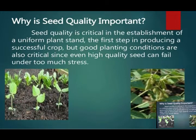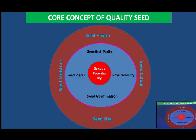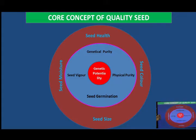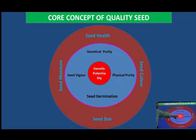These slides show why seed quality is important to grow a good commercial crop. Seed quality can be easily understood with the core concept of quality seeds. There is the inner core, the middle core, and the outer core — three circles. The inner core must have genetic potential. We should produce seeds of that particular variety which has genetic potential, superior to that of the existing ones.